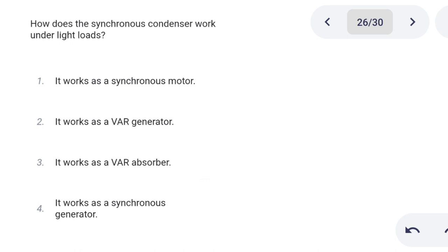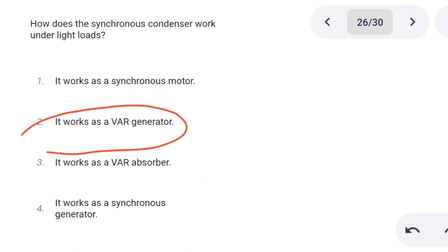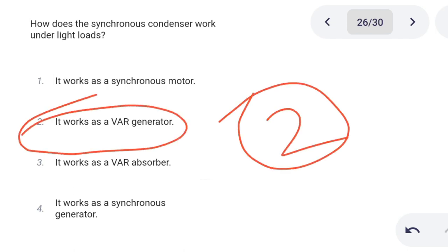Next one. How does a synchronous condenser work under light load? Option 1: it works as a synchronous motor. Option 2: it works as a VAR generator. Option 3: it works as a VAR absorber. Option 4: it works as a synchronous generator. Correct answer is option 2: it works as a VAR generator.